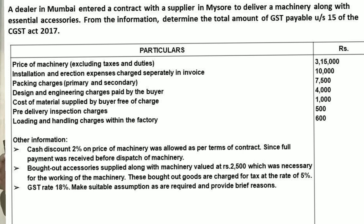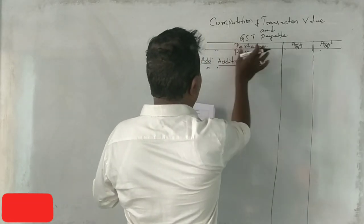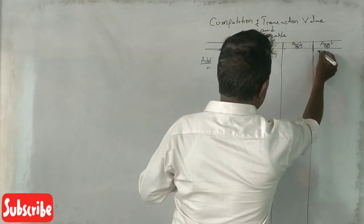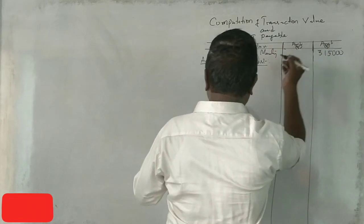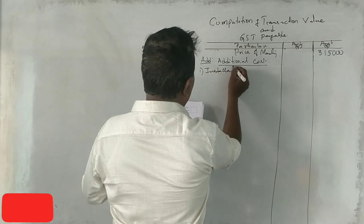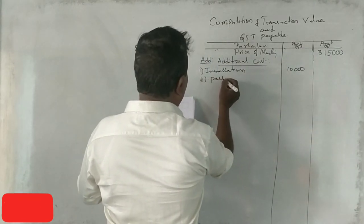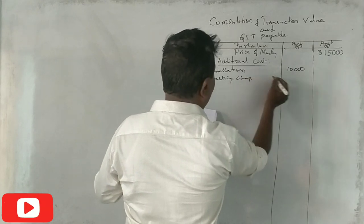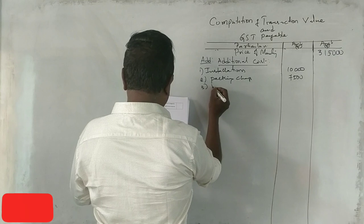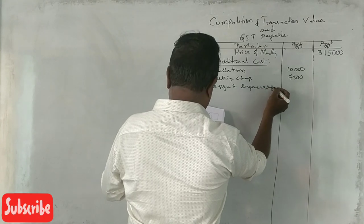The GST rate of the accessories is 5%, and the GST rate of the finished goods (machinery) is 18%. That means 18% is considered. So, make the suitable assumptions and provide brief reasons. The price of the machinery is Rs. 3,50,000. Installation cost is Rs. 10,000. Packing charges are Rs. 7,500. Design and engineering charges are Rs. 4,000.